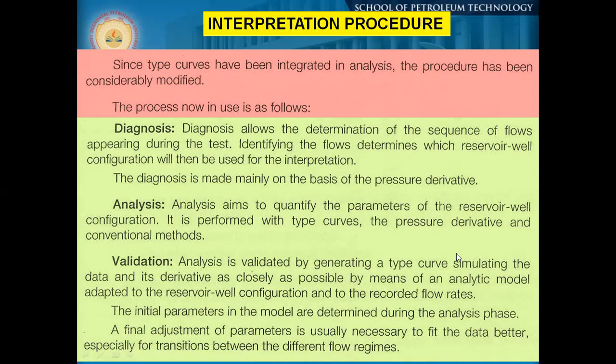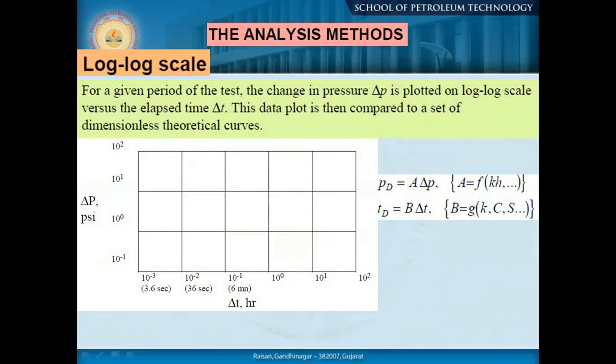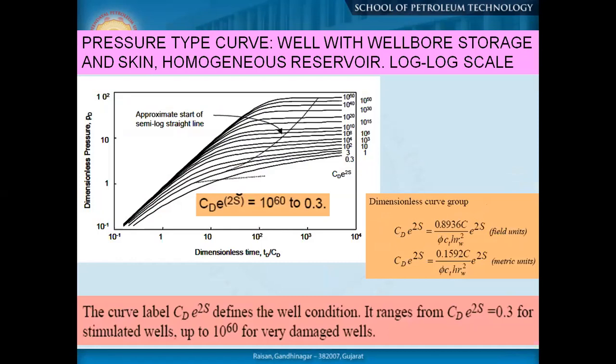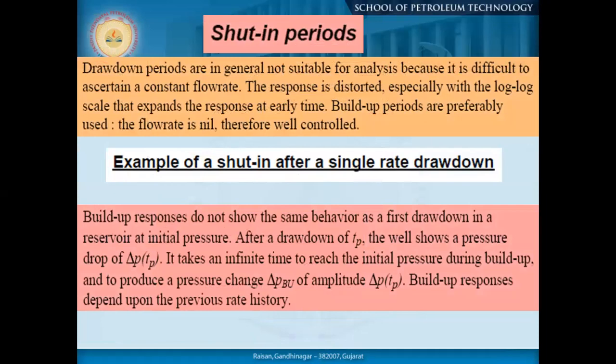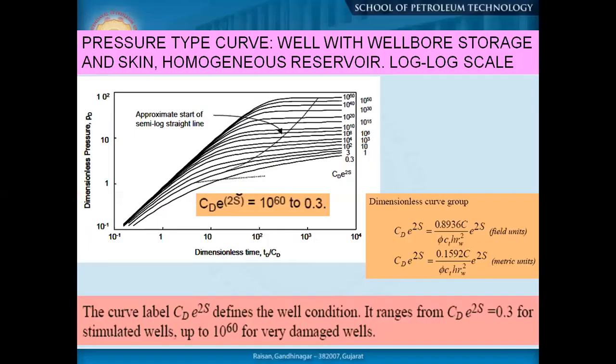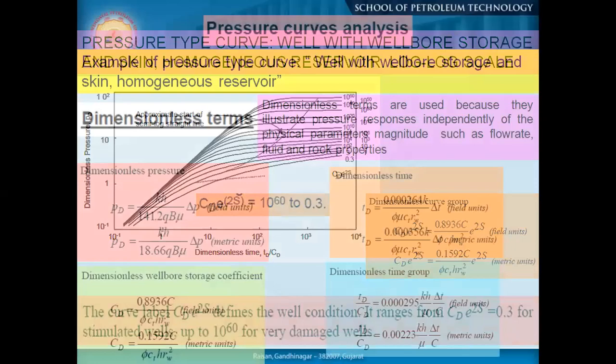This is a very simple method. We have a set of type curves where the y-axis is dimensionless pressure and there is also a pressure derivative graph. This is a set of type curves — all the variations we discussed about wellbore storage and skin. Whenever the graph moves away from a straight-line domain, we are gradually moving away from wellbore storage effect. The limit of 1.5 is considered the final limit of wellbore storage effect, after which skin effect comes into the picture.